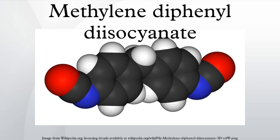MDI reacts with polyols in the manufacture of polyurethane. It is the most produced diisocyanate, accounting for 61.3% of the global markets in the year 2000.